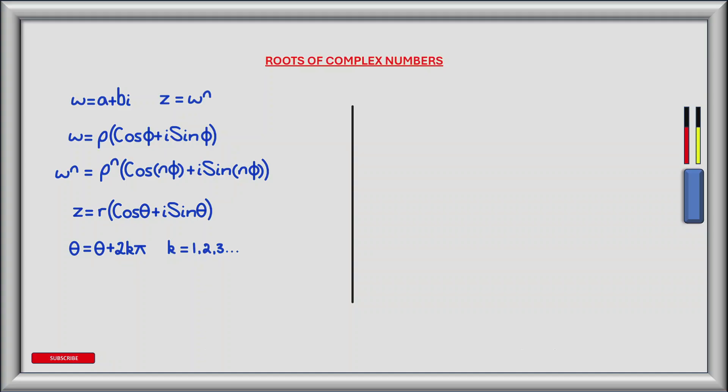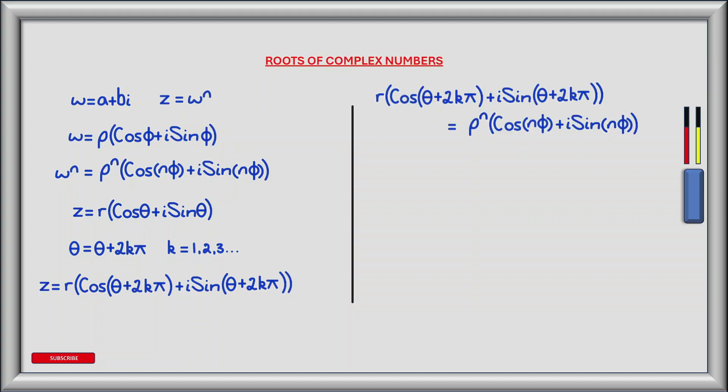Due to the periodic nature of the sine and cosine functions, in this context we can replace theta with theta plus 2k pi, where k is any integer. If we vary the values of k and take the sine or cosine of theta plus 2k pi, we'll end up with the same result. So we can rewrite z as r times the bracket of cos(theta + 2k pi) plus i sine(theta + 2k pi). For these two expressions to be equal, r must equal rho to the power of n.